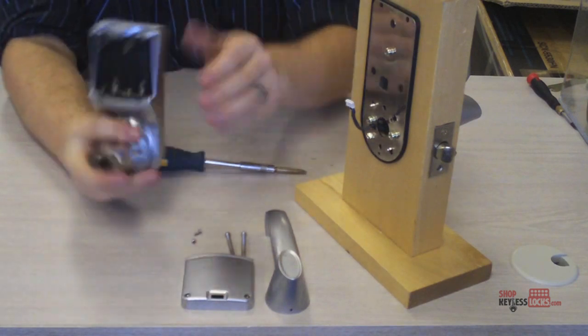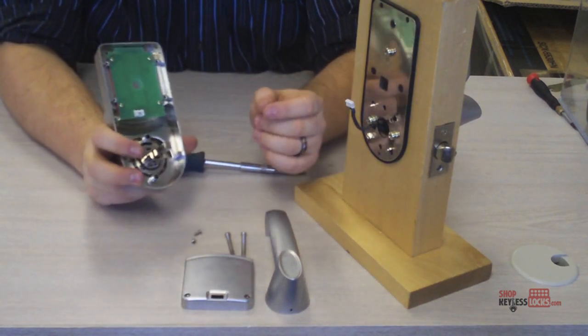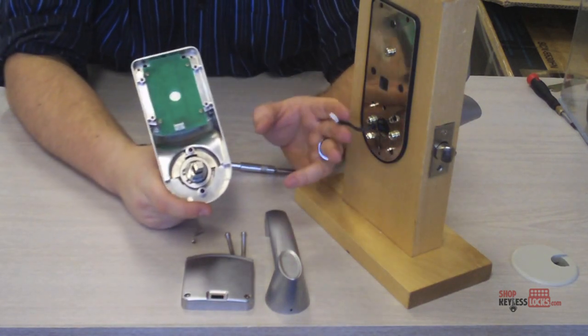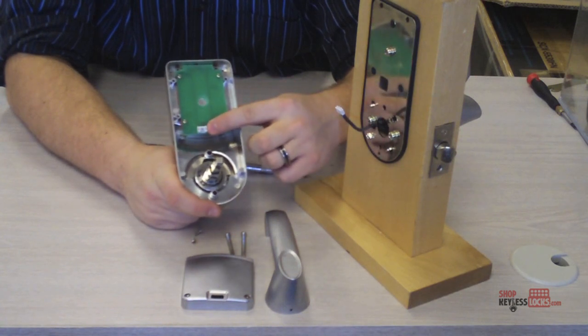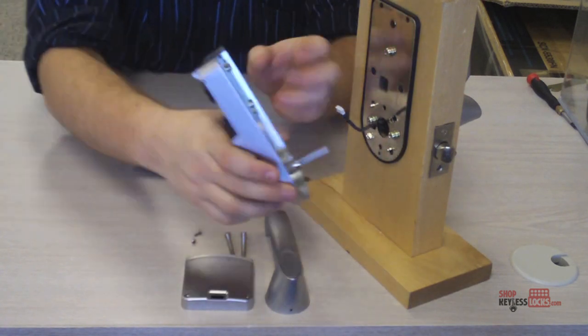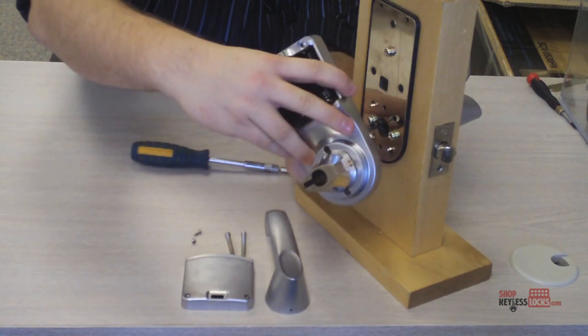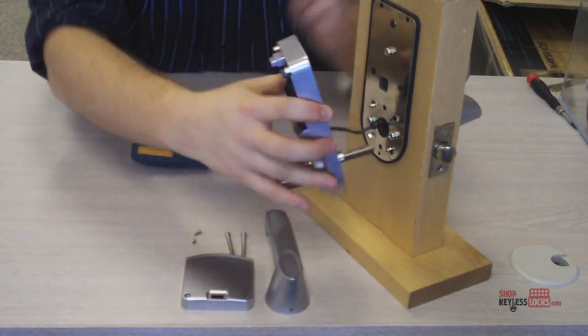Once those are tight, take the back of the lock and what you're going to need to do is take the power cable and just plug it in right there. Just like that.